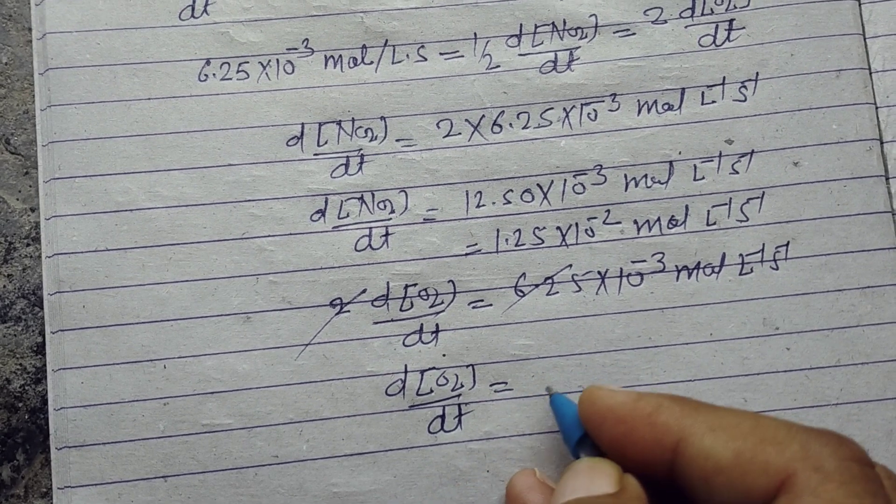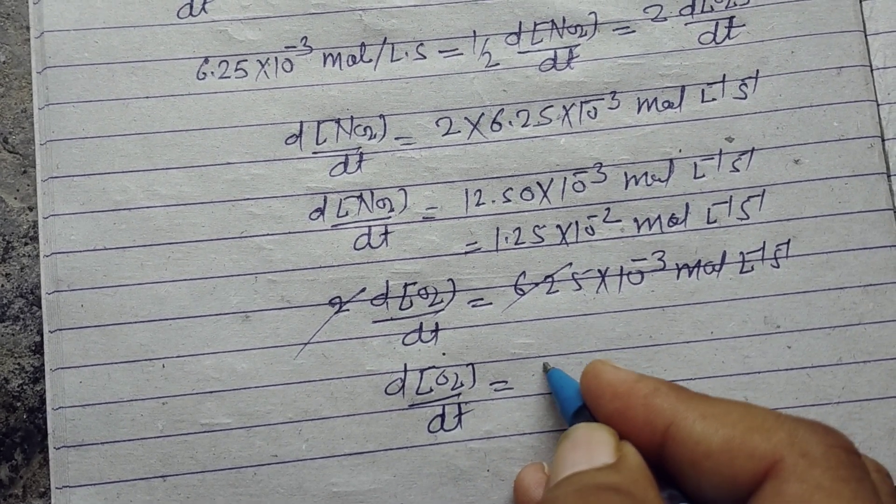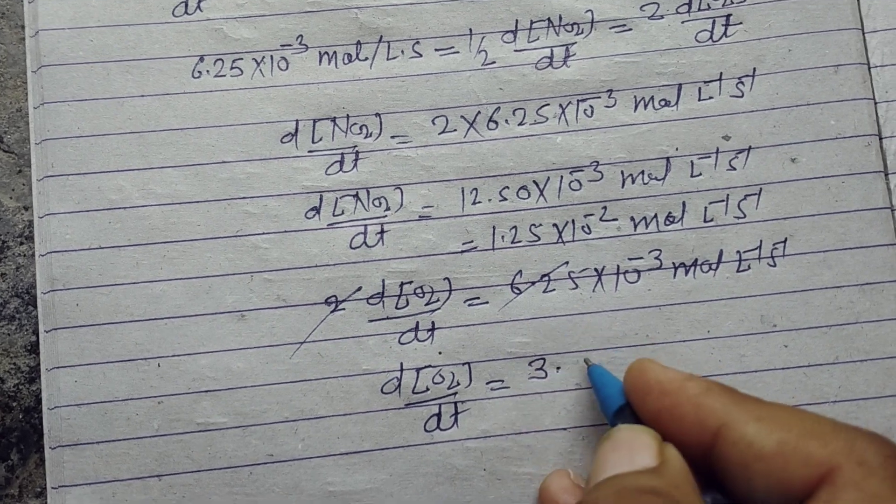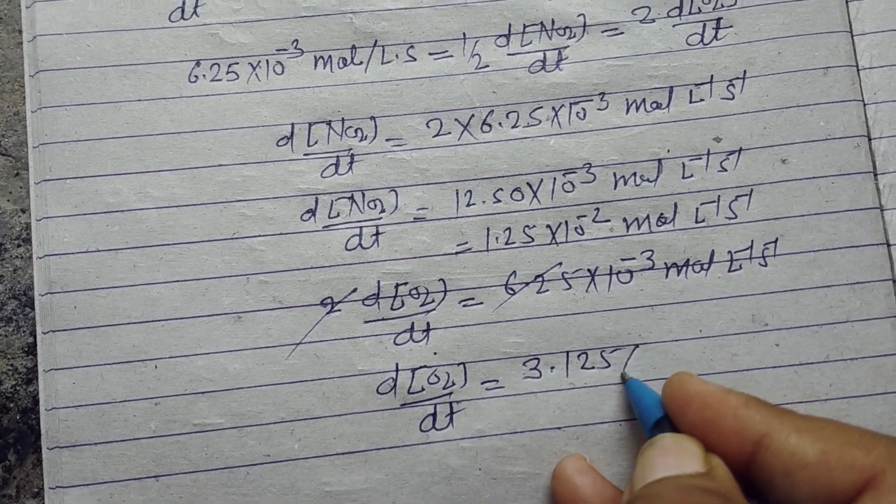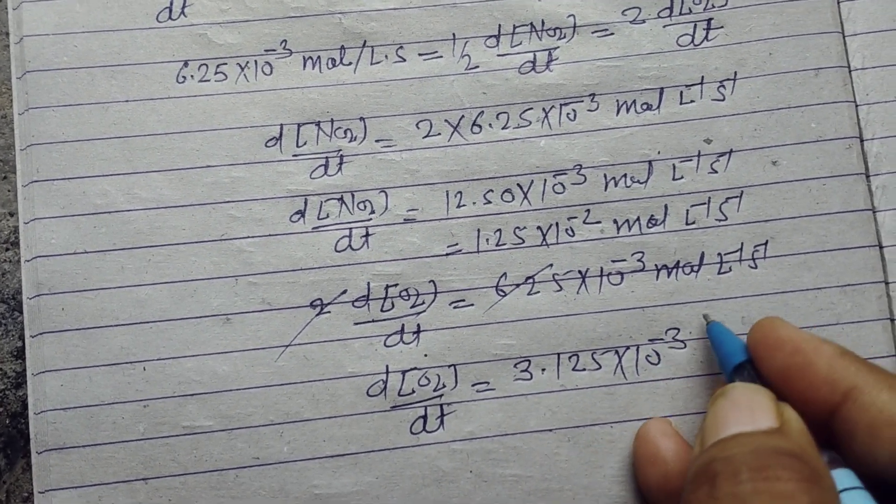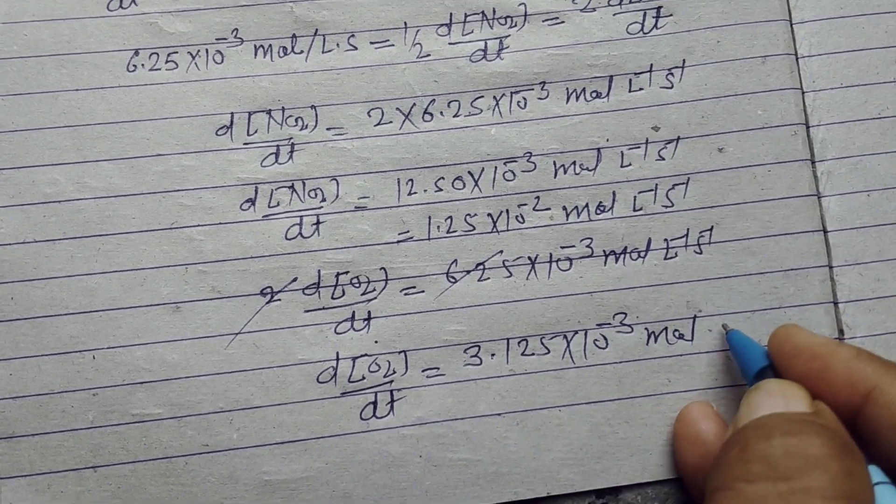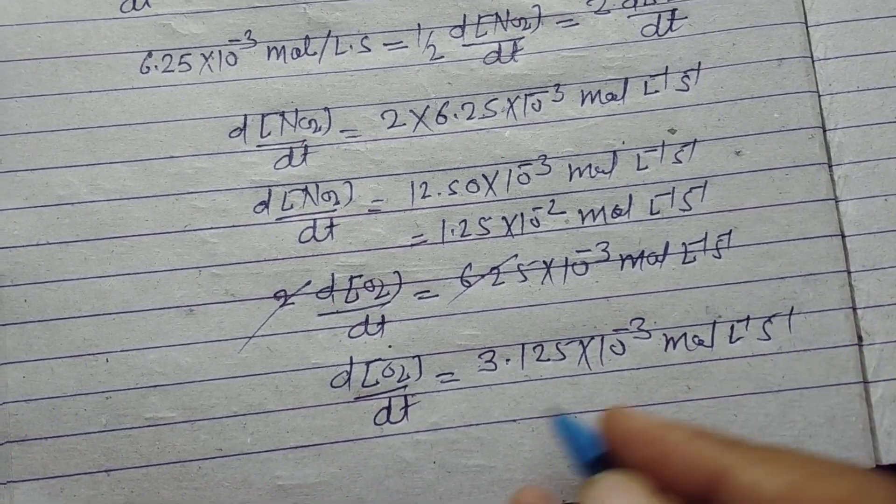So d[O2]/dt equals half of 6, which is 3.125×10^-3 mol per liter per second.